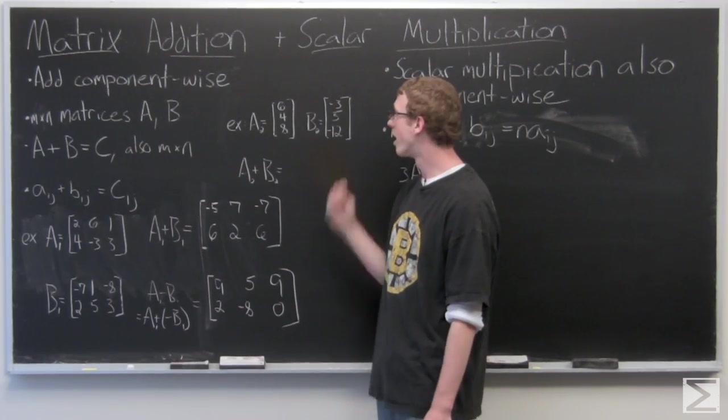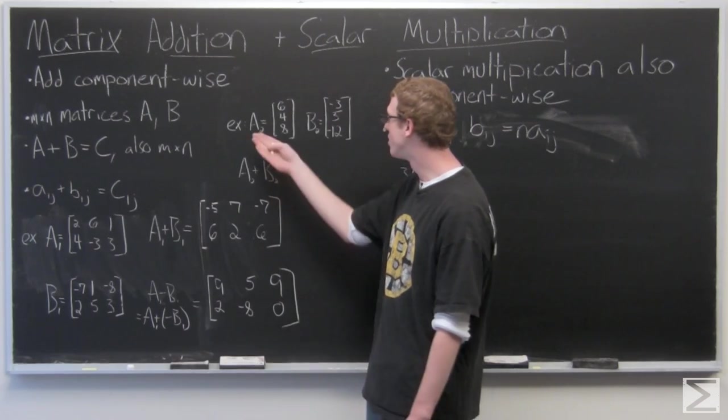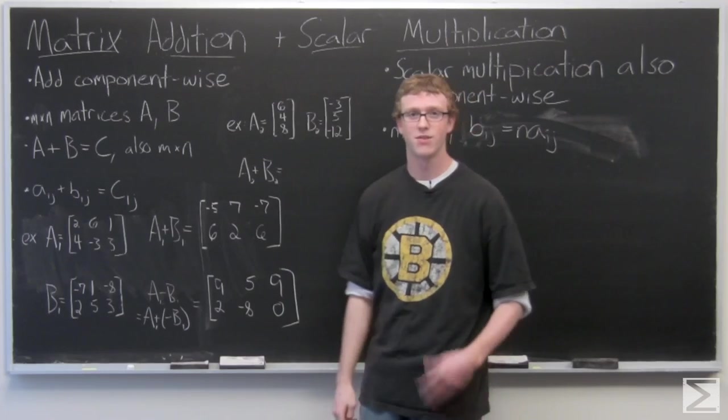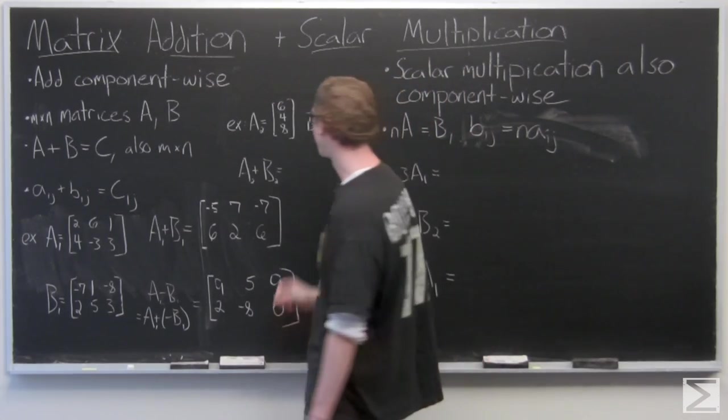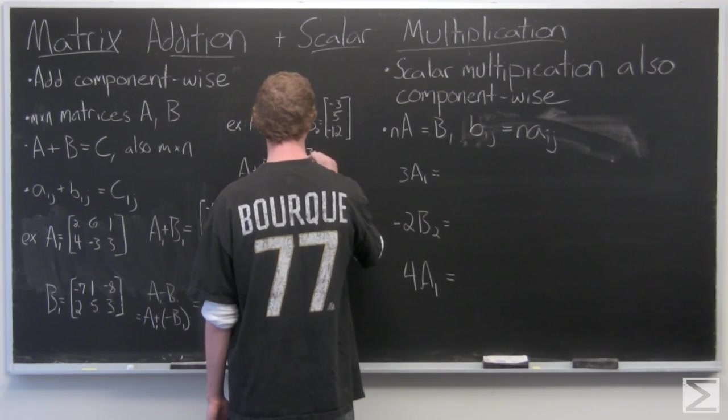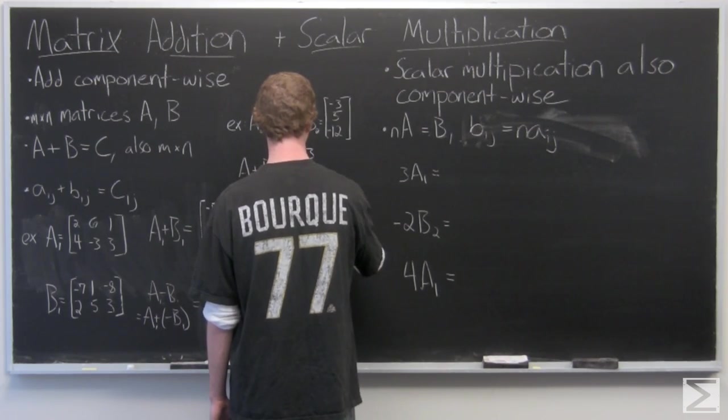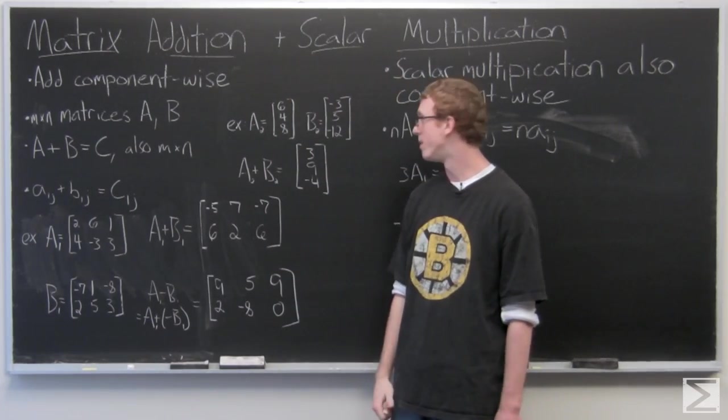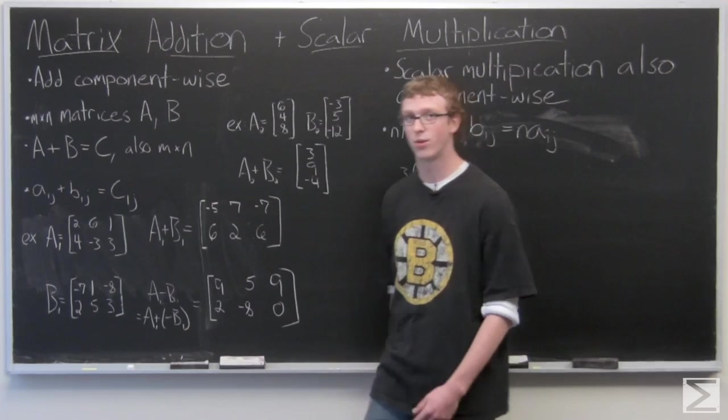I'll take another look at a three by one matrix here, A2: 6, 4, 8, and B2: negative 3, 5, 12. Again, just add component-wise. And the resultant matrix is also a three by one matrix: 3, 9, negative 4.